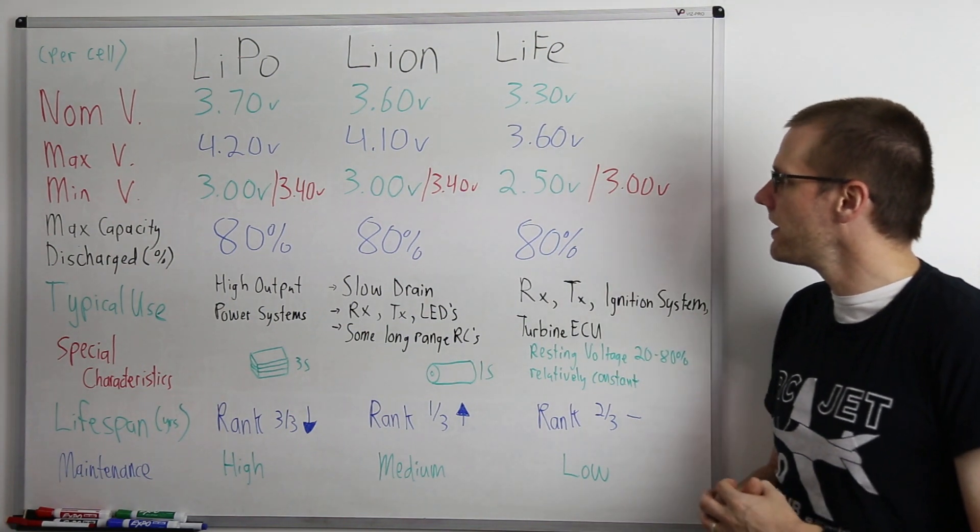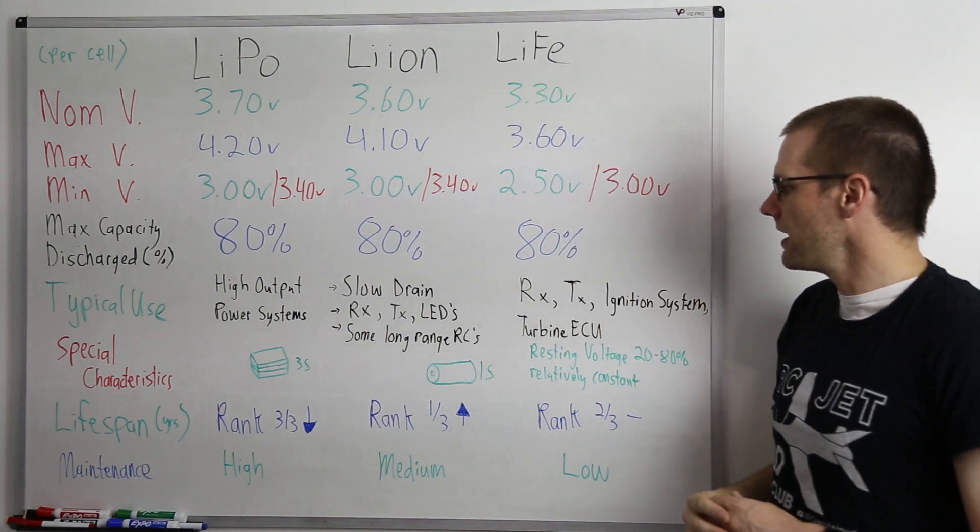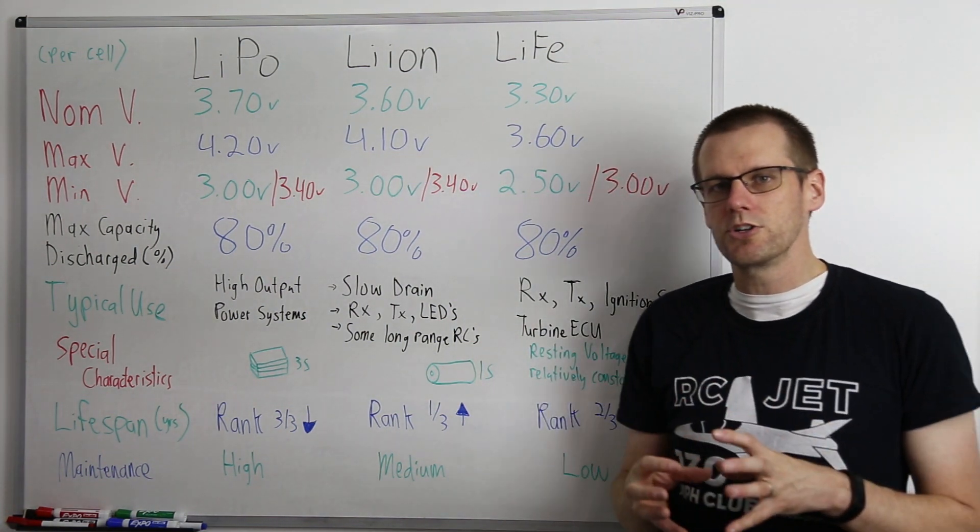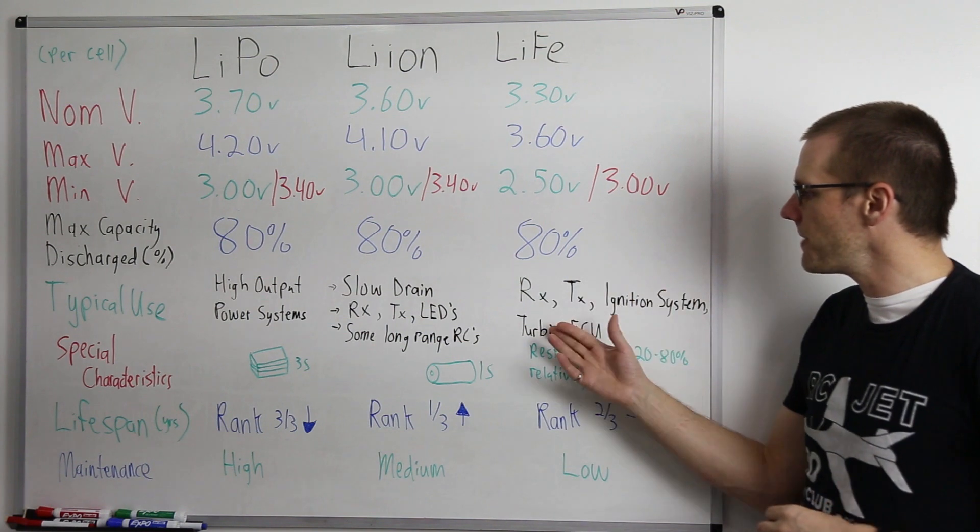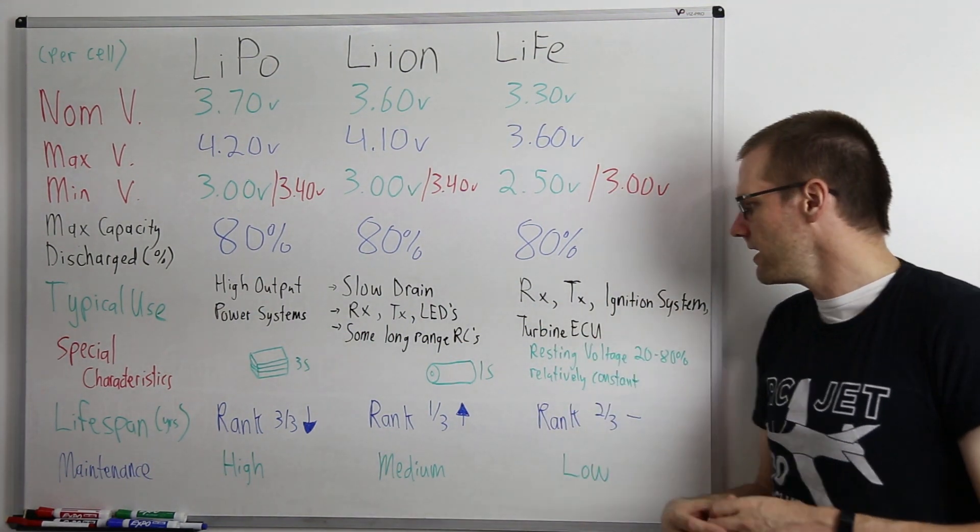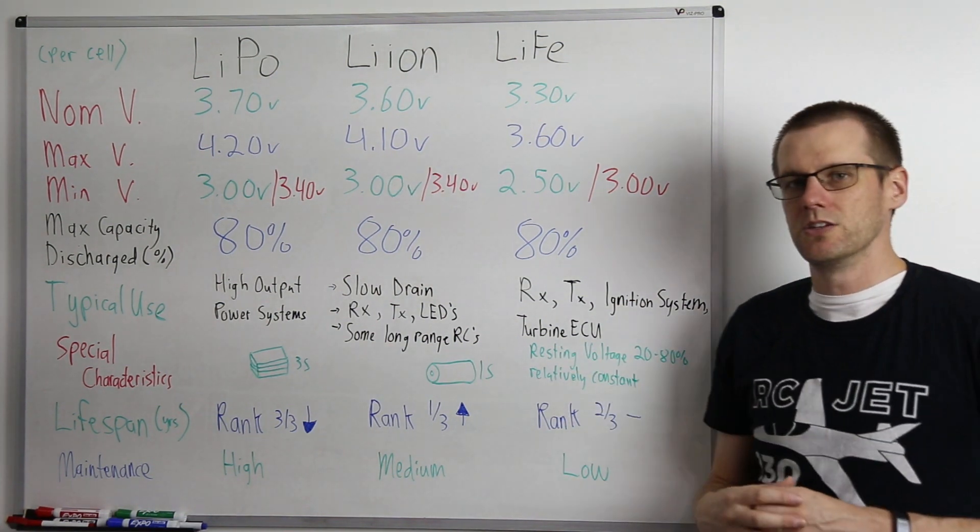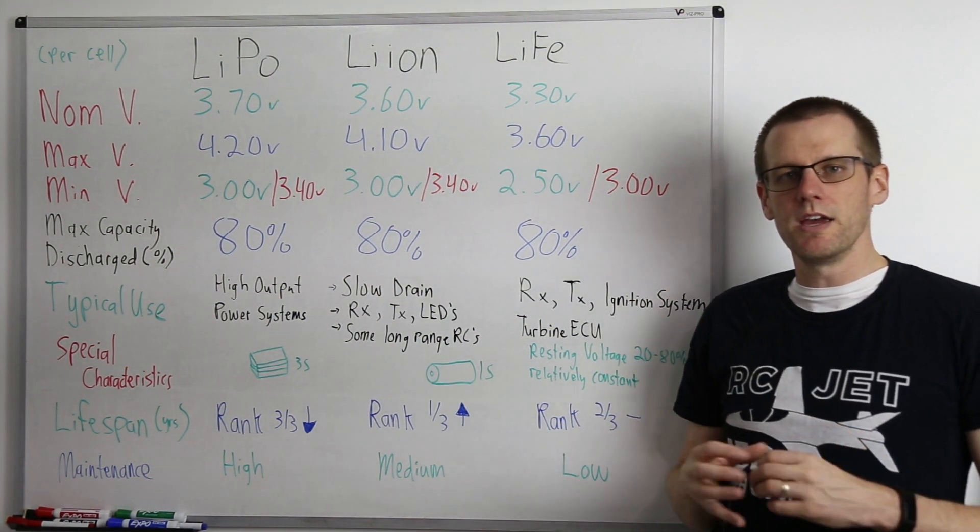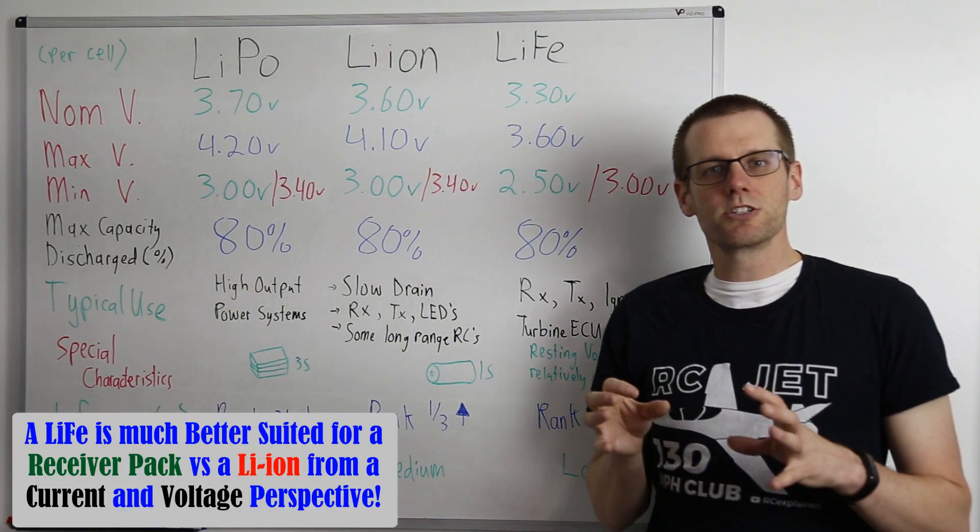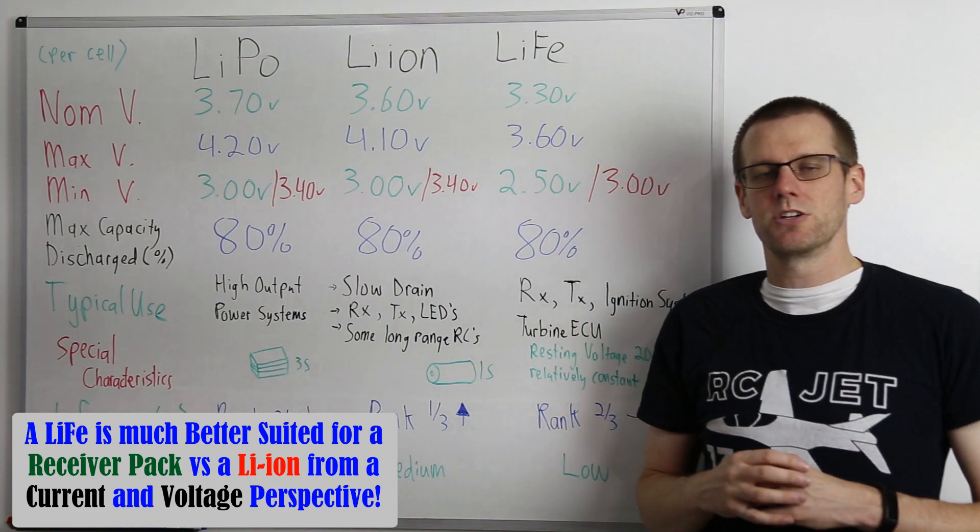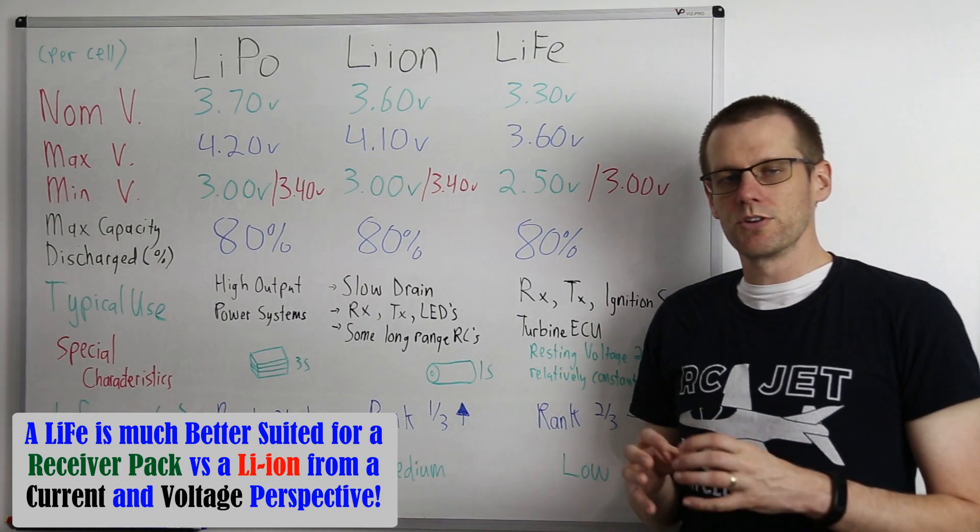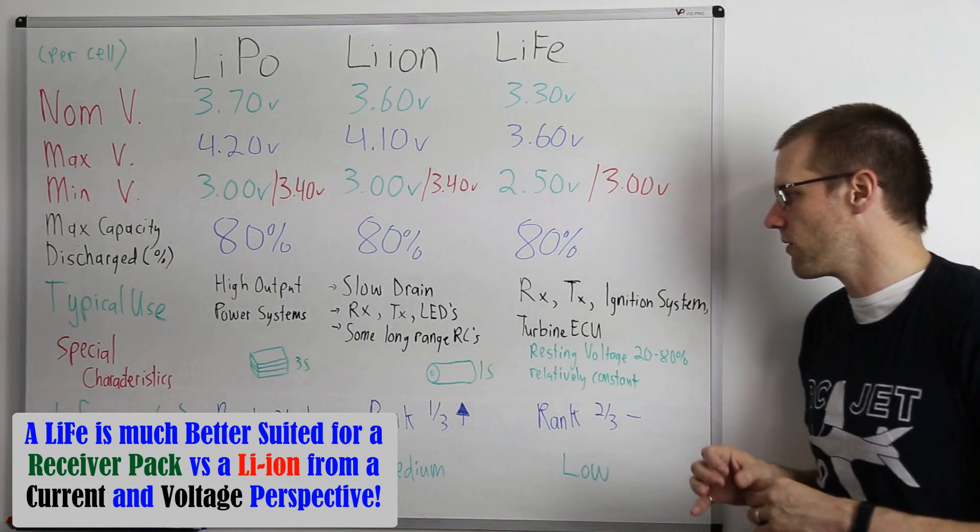Now, the last item that we do have up on the board here is our LiFe. This is used in multiple different locations, especially with larger radio control vehicles. We can see these battery packs being used in transmitters as well as receivers, and even ignition systems or turbine ECUs. A nice thing about the LiFe battery cell is that it has a nominal voltage of 3.3 volts, which actually makes it ideal for RX applications.